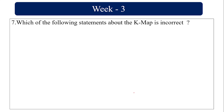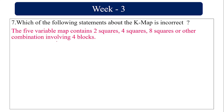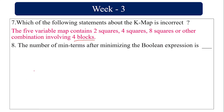Regarding which K-map statement is incorrect: a 5-variable map contains 2^5 = 32 squares, formed by two 4-variable blocks of 16 each — so two blocks, not four. Four blocks would correspond to a 6-variable map, not 5-variable.